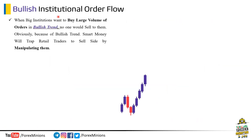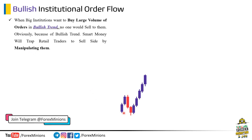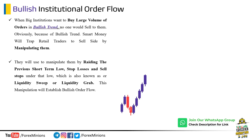Let's start with bullish order flow. In the Forex market, we can only sell if there is a buyer, and we can only buy if there is a seller — it means if there is liquidity. When big institutions want to buy large volume of orders in a bullish trend, no one would sell to them — obviously, because of the bullish trend. Smart money will trap retail traders to the sell side by manipulating them. Check this chart: market was bullish and big institutions wanted to buy more, but no one was willing to sell them. That's why they manipulated traders by showing a willingness to sell. See these big sell-side candles — after seeing such big selling candles, retail traders started selling, and smart money started buying at this point. This is how institutions actually work.